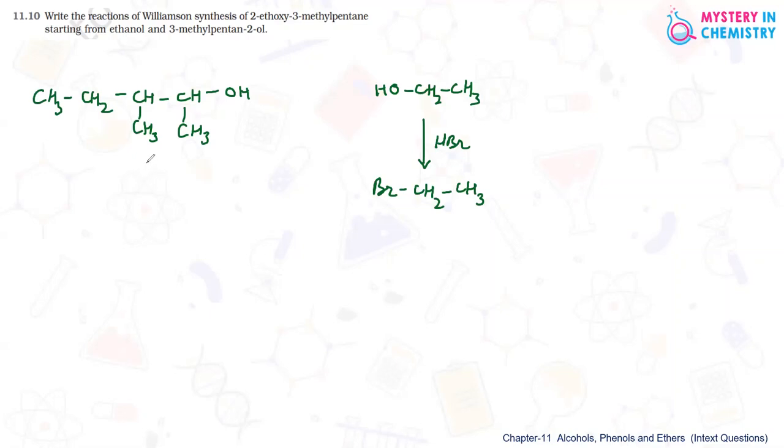So, next this should be alkoxide. Now, if it is alkoxide it should be treated with sodium. Alcohols can react with sodium and by that we know that alkoxides are formed.